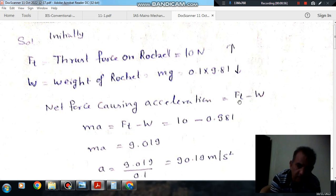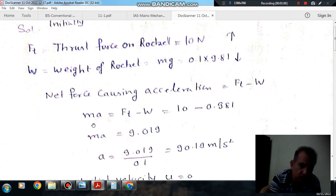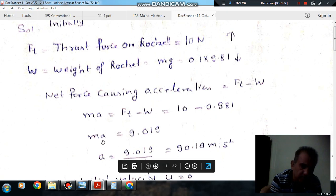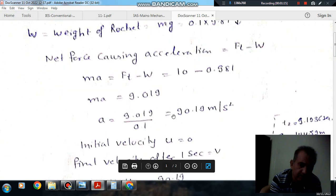So net force causing acceleration is Ft - W, that is 10 - 0.981 = 9.019 N. This equals ma = 9.019. From this, acceleration a = 9.019/0.1 = 90.19 m/s².